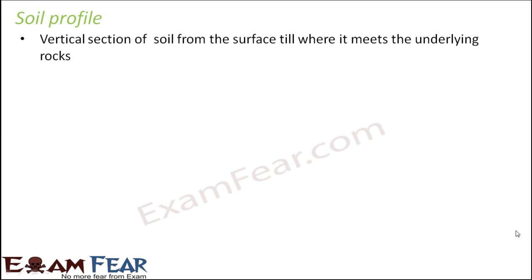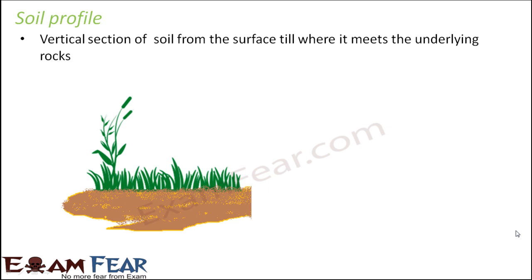The soil we see from above is basically the topmost layer. If you actually dig inside, you will find that there are many layers of soil which exist one below another. Soil profile is that vertical section of soil from the surface until it meets the underlying rocks. When we look at soil from above, we see only the topmost layer where the plants grow.